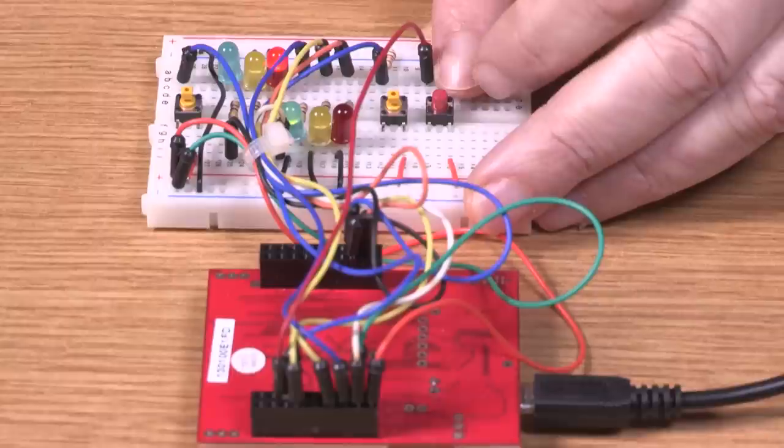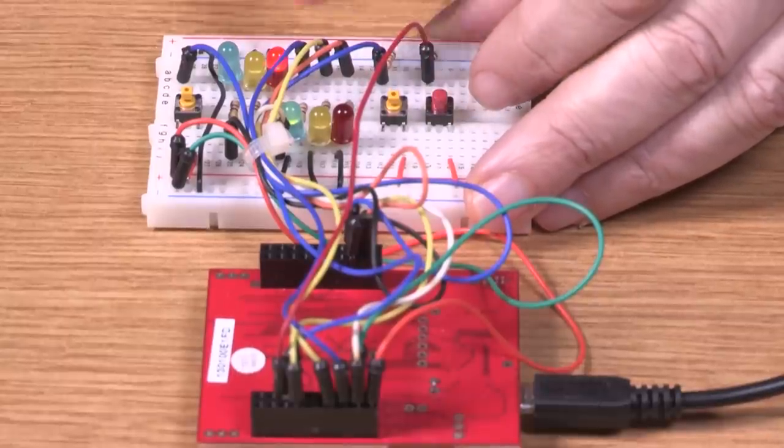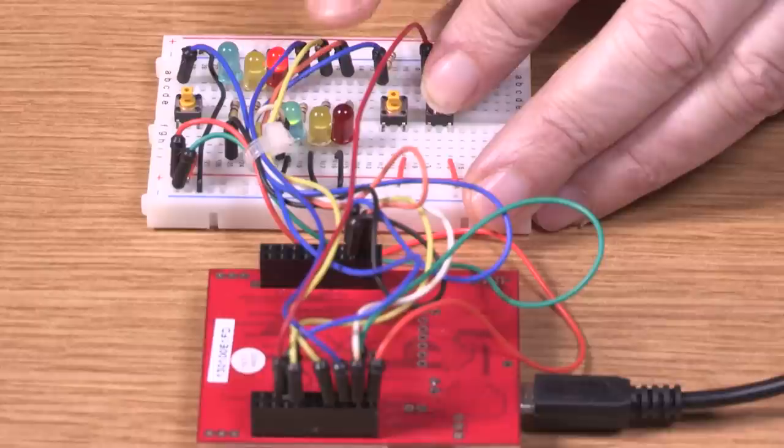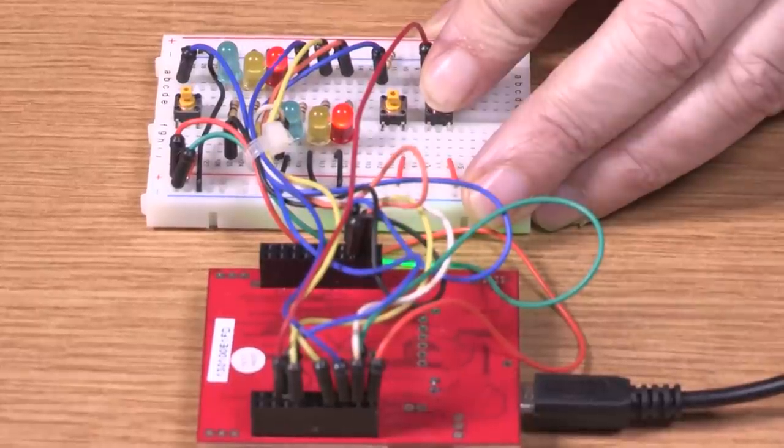And lastly, if I push the walk button, that's this one, both roads will go to red, and we can see the green walk light there.